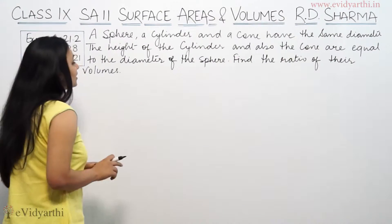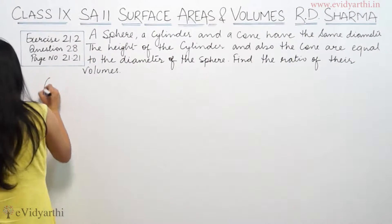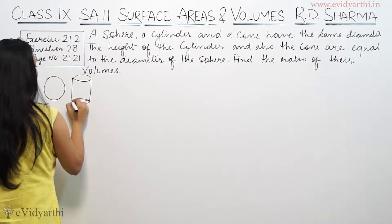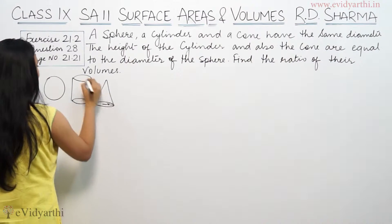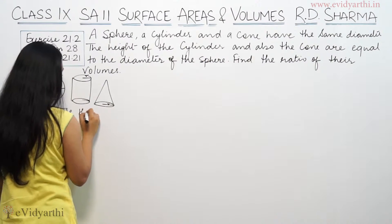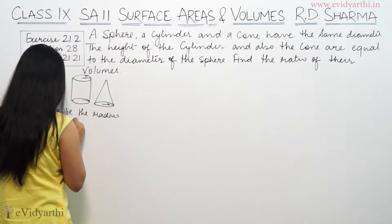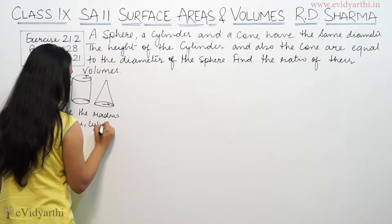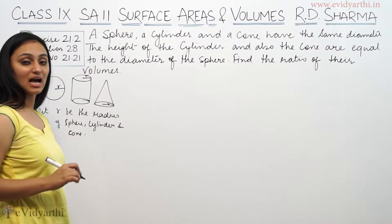It says a sphere, a cylinder and a cone have the same diameter — teeno ka diameter same. Sphere ka, cylinder ka and cone ka. Teeno ka diameter same, that means teeno ka radius bhi same hoga. Let r be the radius of sphere, cylinder and cone.